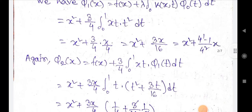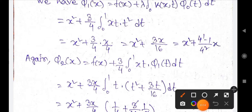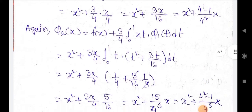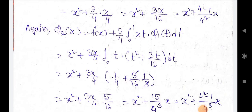This gives x² + (3/4)·(x/4) = x² + 3x/16. Again, φ₂(x) = f(x) + (3/4)·∫₀¹ xt·φ₁(t) dt.